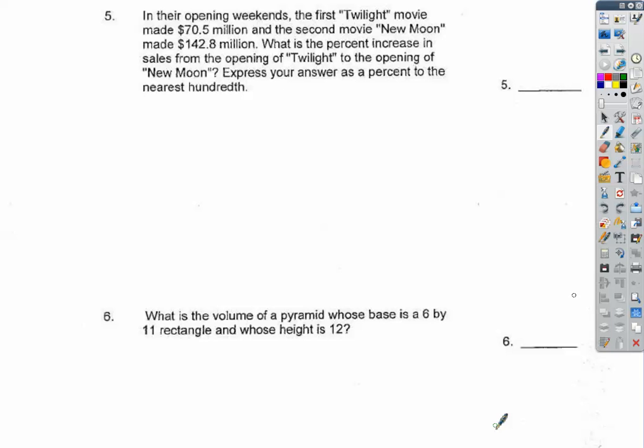Alright, in the opening weekends, the first Twilight movie, actually I never saw it, made $70.5 million. The second movie, New Moon, made $142.8 million. Watch out, this may show up this year, 2013, for the, what's it called, maybe Hunger Games movies.